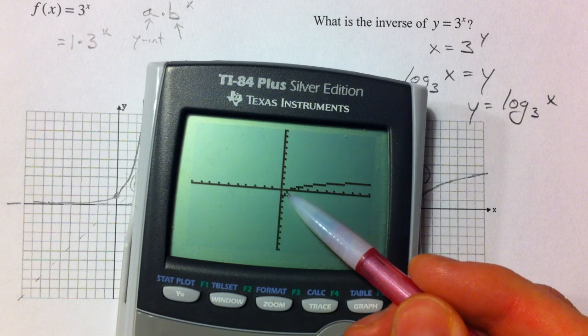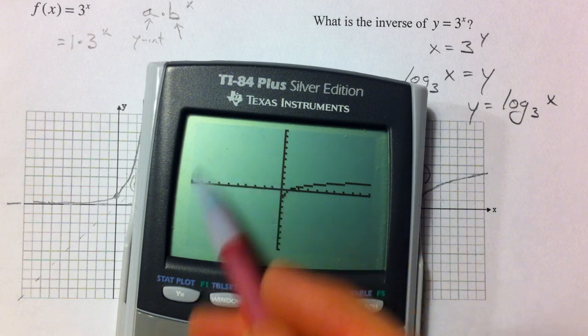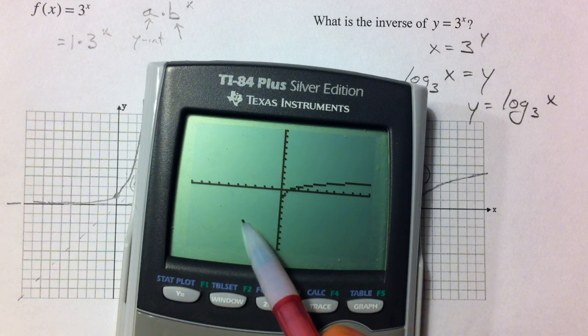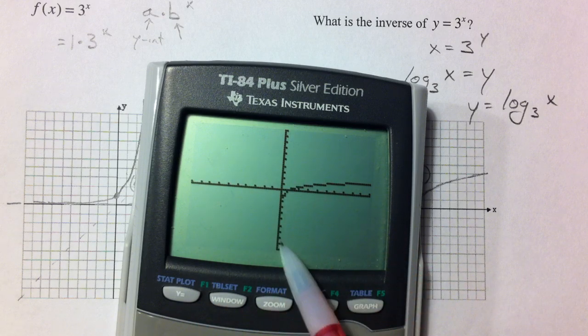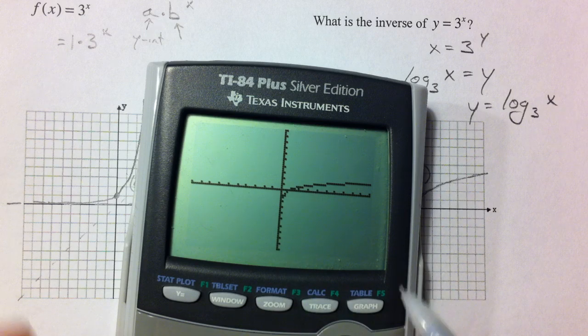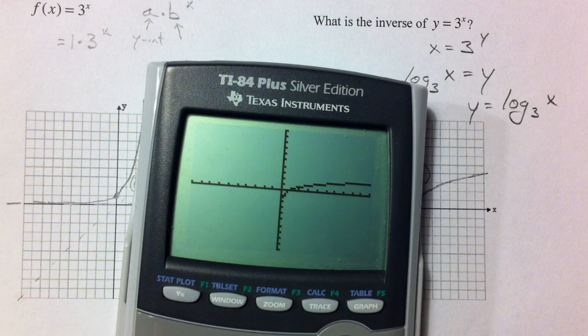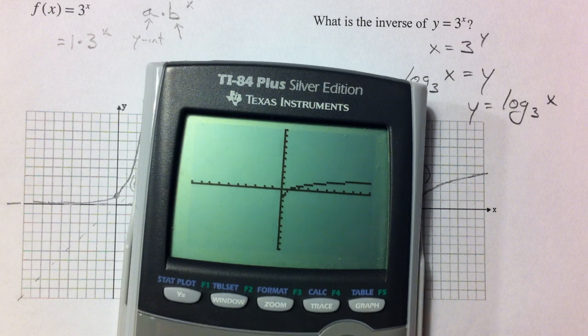And so again, logs, we don't have any negative values over here. We can't take the log of a negative, actually can't take the log of 0. And so where our domain before is now going to be a range, and our range is going to be our domain. They flip flop.